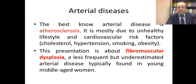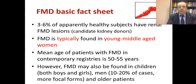This presentation is not about atherosclerosis. It is about fibromuscular dysplasia, a less frequent but underestimated arterial disease, typically found in young middle-aged women. While FMD was for long considered a rare disease, it has been shown that 3 to 6% of apparently healthy subjects have renal FMD lesions, as shown in studies of candidate kidney donors. This suggests FMD is not really a rare disease.